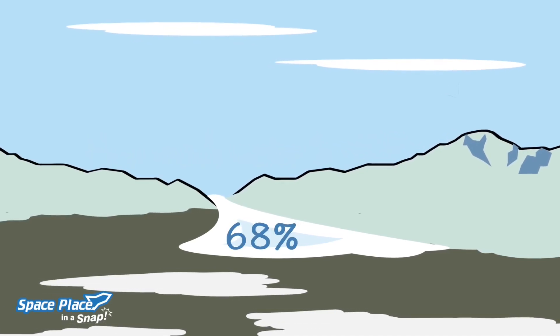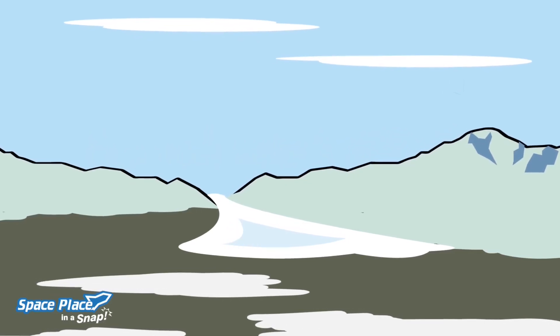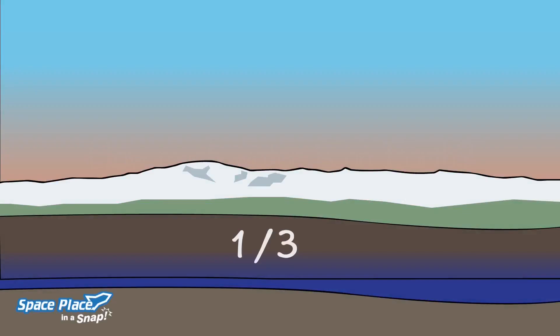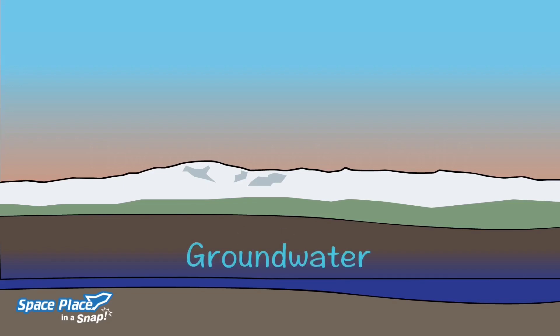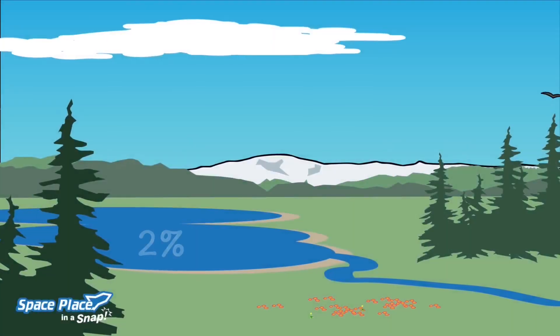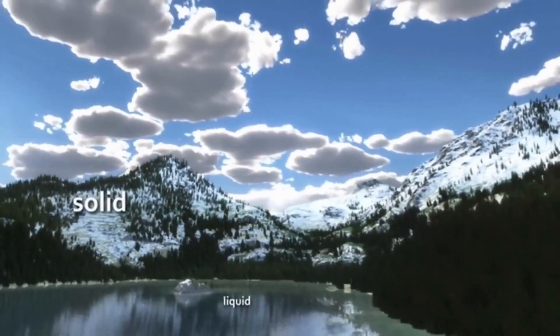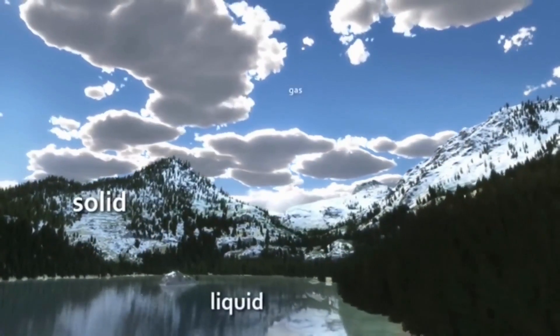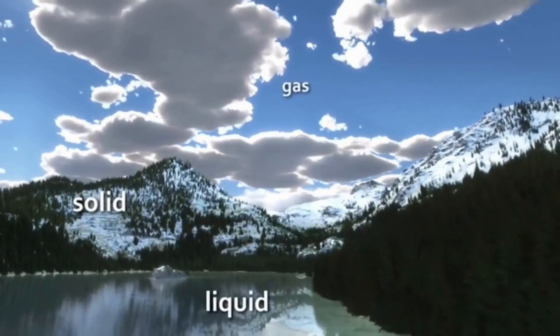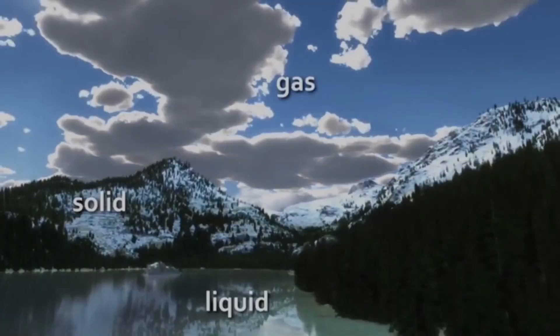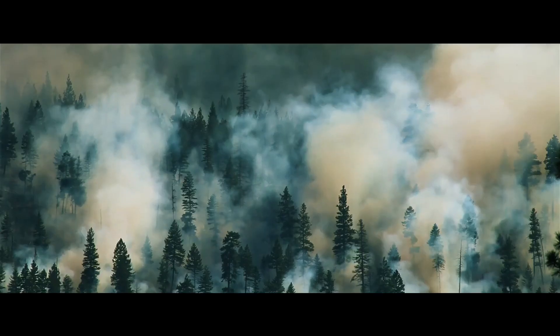68% of fresh water is trapped in ice, one third is in the ground, and the last 2% is in rivers, lakes, streams, and a bit in the atmosphere. But above all, the situation is getting out of hand day by day.